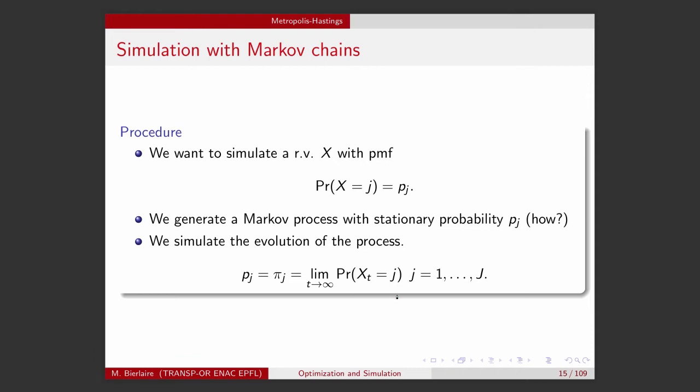Then we simulate the process — we simulate for each period of time what is the next state and the next state and the next state. And because eventually, asymptotically, this will converge to pi_j, and pi_j equals p_j, just running the process will give us draws from the target distribution.